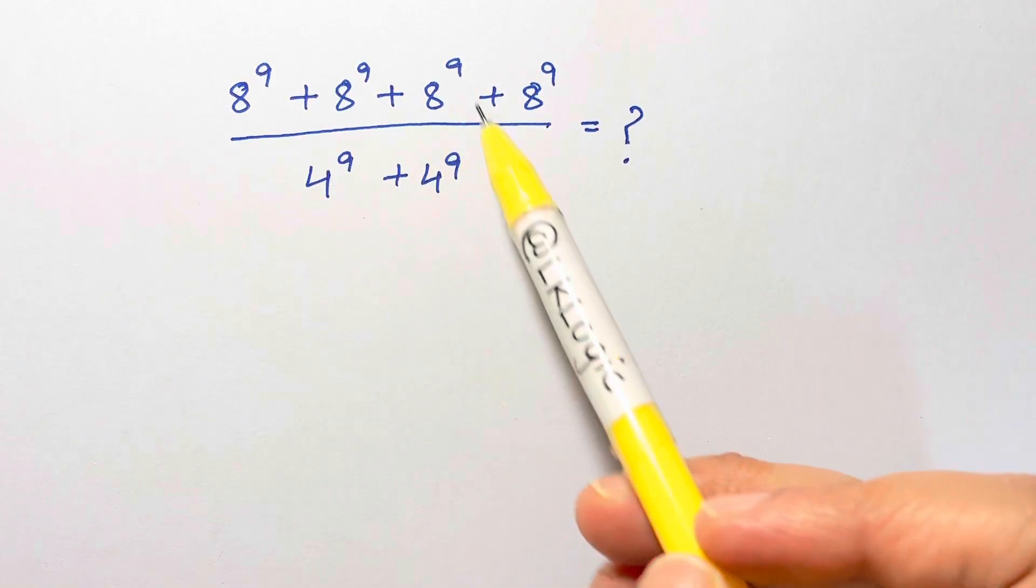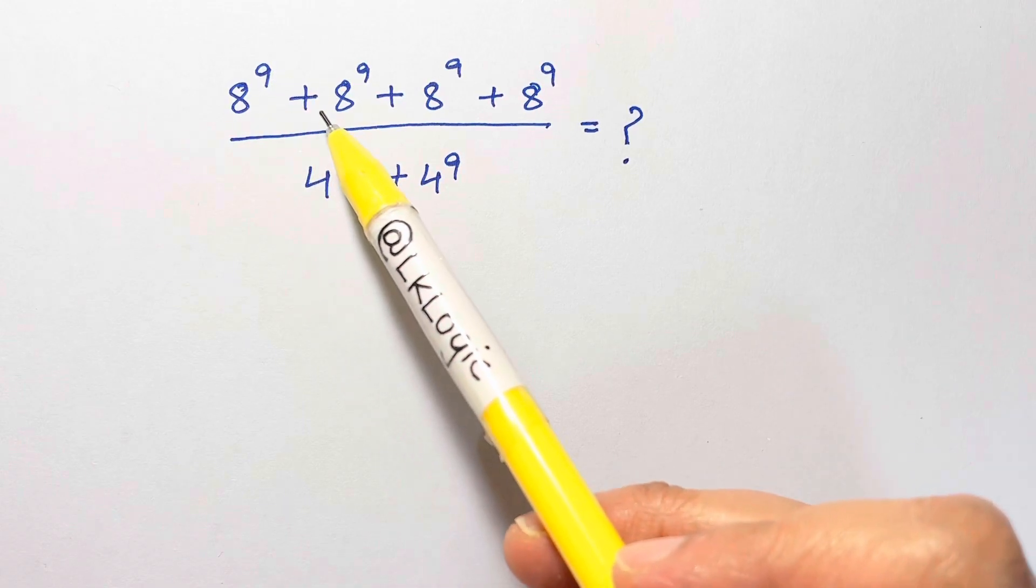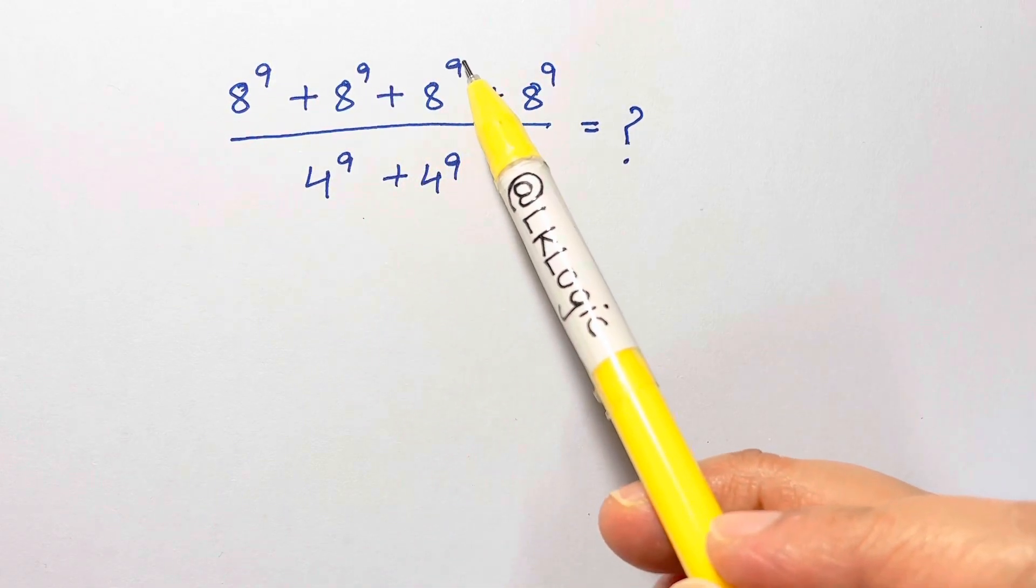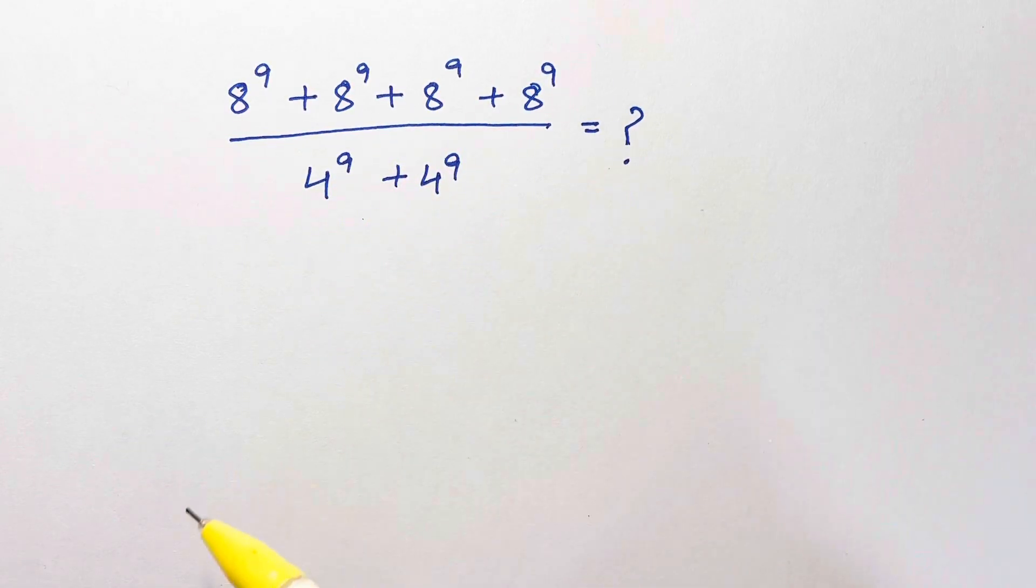Hi guys, I have a nice exponential problem for you all, which is 8 to the 9 plus 8 to the 9 plus 8 to the 9 plus 8 to the 9, over 4 to the 9 plus 4 to the 9, equals what?